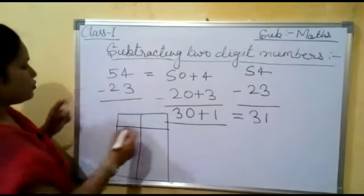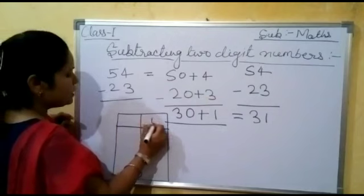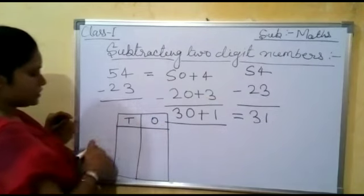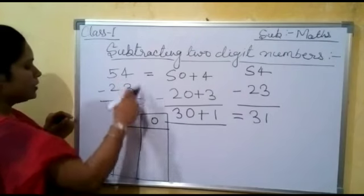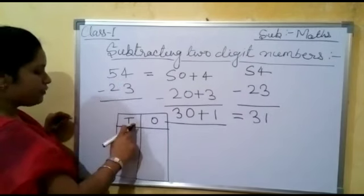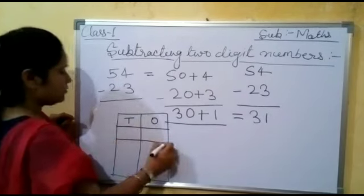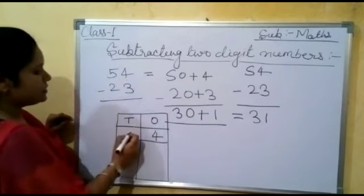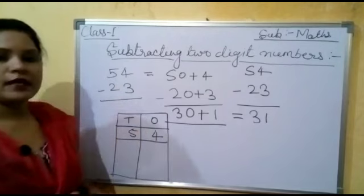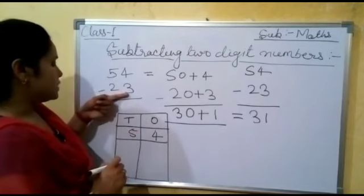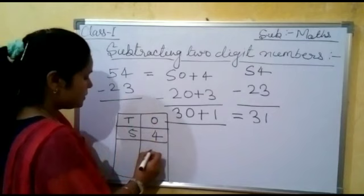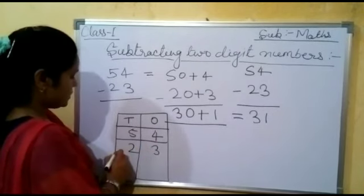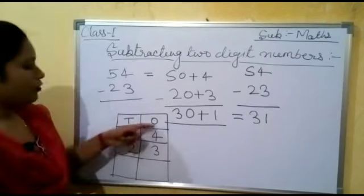Now we can make a table. In this table we will write ones and tens. We will write the numbers in ones and tens form. The first number is 54: 4 is in the ones place and 5 is in the tens place. Similarly, for 23: 3 is in the ones place and 2 is in the tens place.